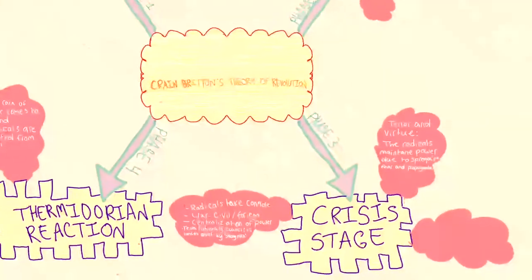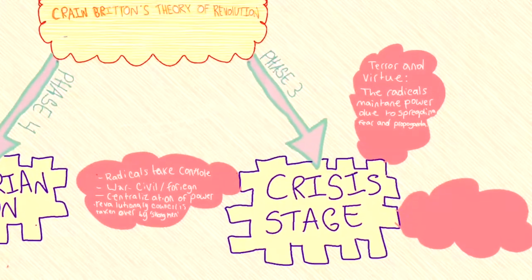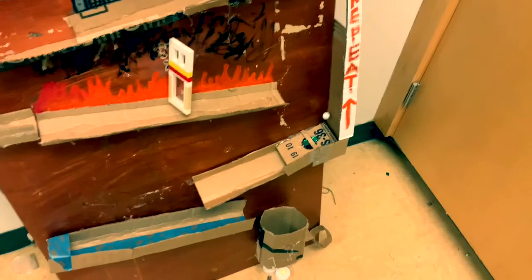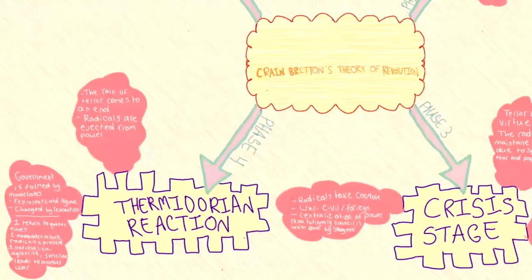The next stage is the crisis stage, where the moderates lose power and the radicals take control. In our machine, this is briefly shown by the fire that represents the havoc that the radicals cause.